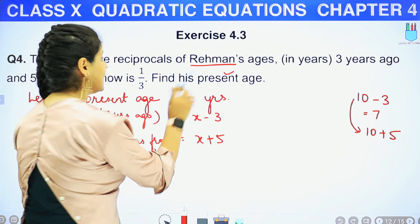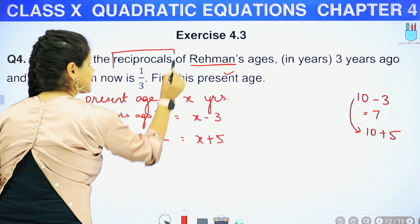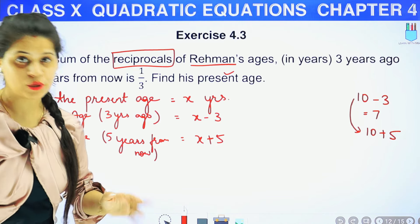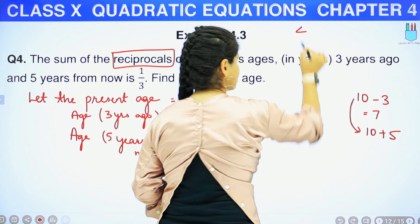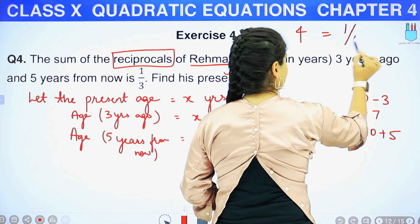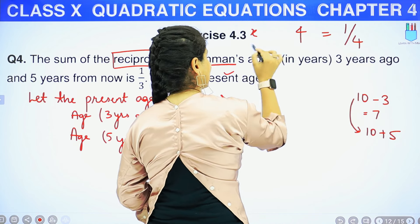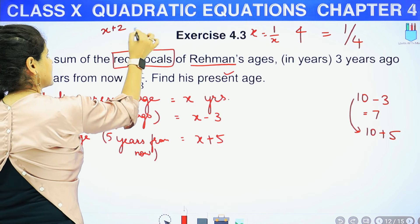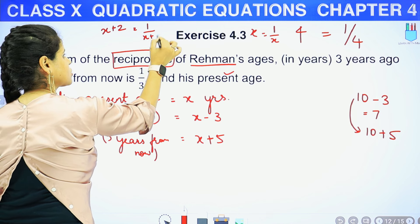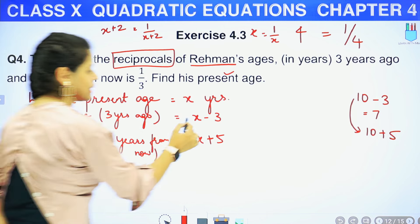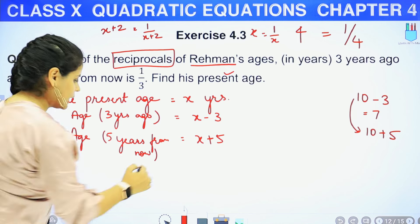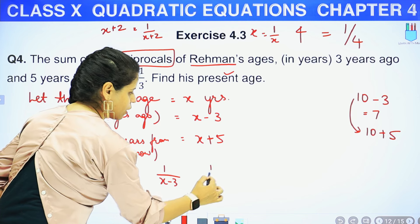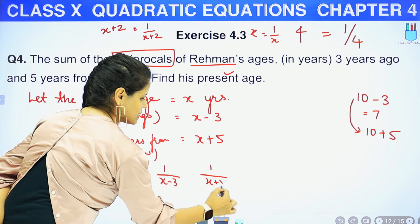लेकिन हमें यहाँ पे reciprocal बोला है — इन दोनों ages के reciprocal की बात है. Reciprocal कैसे करते हैं? Simple, कोई number है 4, इसका reciprocal होगा 1 upon 4. अगर number है X, तो reciprocal होगा 1 upon X. अगर number है X plus 2, तो reciprocal होगा 1 upon X plus 2. So X minus 3 का reciprocal होगा 1 upon (X minus 3), और X plus 5 का होगा 1 upon (X plus 5).